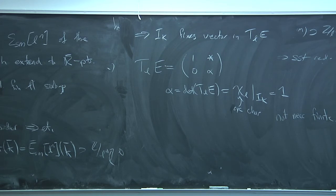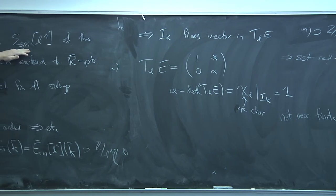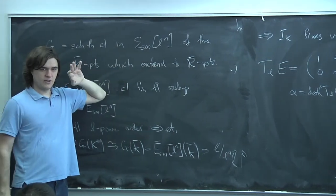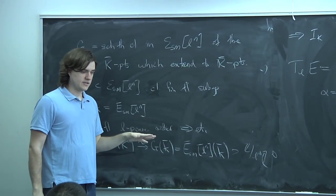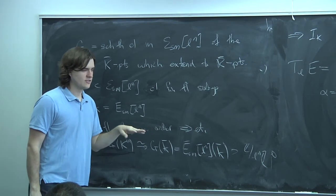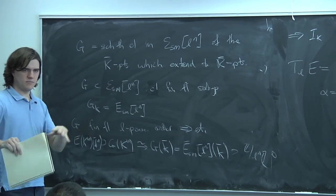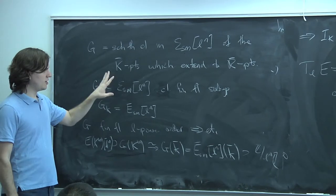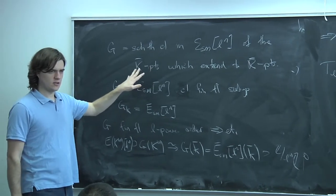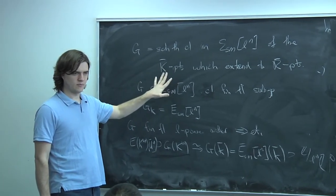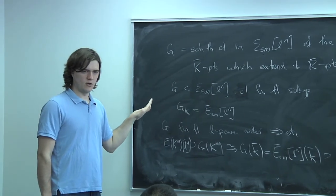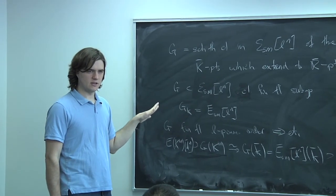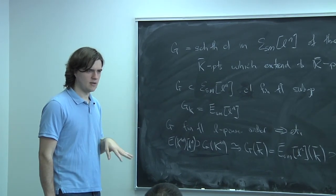So you see here that this kind of group scheme — the smooth locus of the ℓⁿ-torsion of this model — is a flat group scheme, and it has this finite étale piece in it. We're going to talk more about group schemes that look like this later on, and this picture will motivate that discussion.